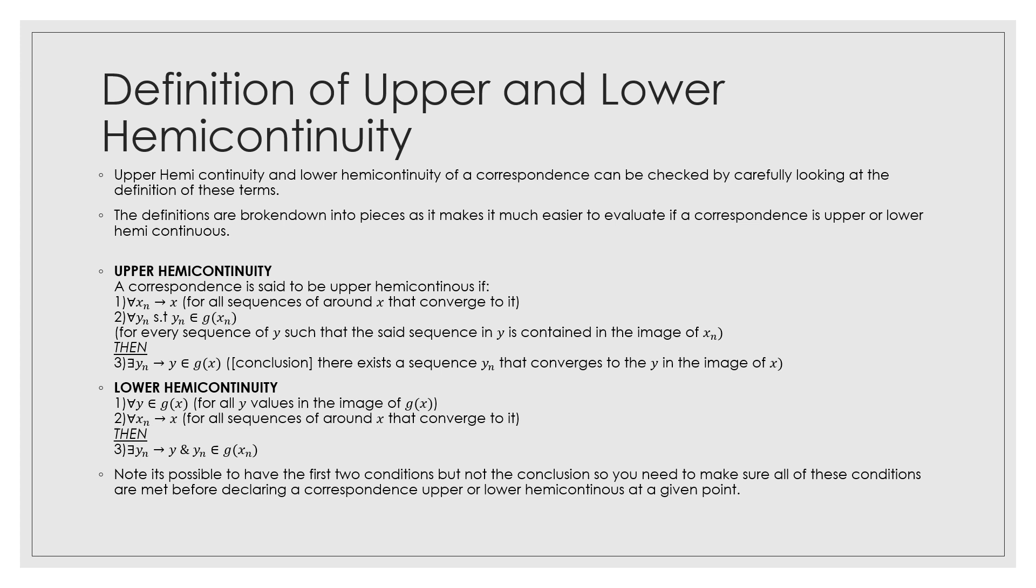The second one, lower hemicontinuity, is: for all y in g(x), that is for all values y in the image of g(x) and for all sequences xₙ that converge to x, then there exists a sequence yₙ that converges to y, and yₙ is contained in the image of g(xₙ), meaning that if we were to evaluate g at xₙ, we would come out with yₙ. Note that it's possible to have the first two conditions but not the conclusion, so we need to make sure all these conditions are met before declaring a correspondence upper or lower hemicontinuous at a given point. Let's get into the example.